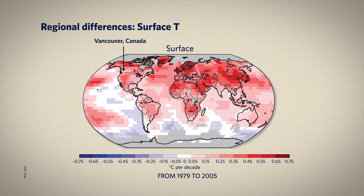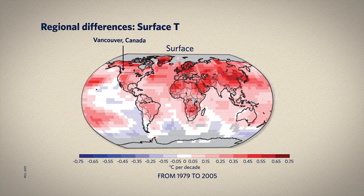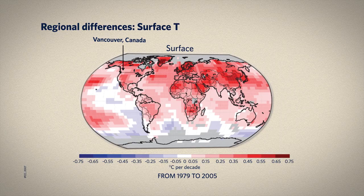Notice how there are more darker red areas over land. Just about everywhere over land has been warming during this period. Some of the strongest warming is at high northern latitudes. In the ocean, less area has been warming, and in some places the sea surface has cooled. In general, with more land, the northern hemisphere has warmed more than the southern hemisphere.